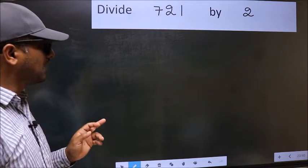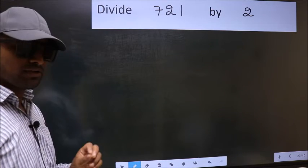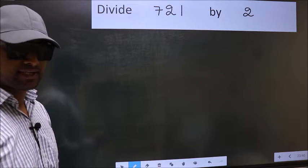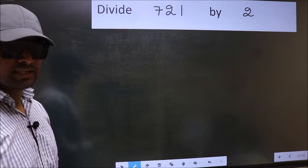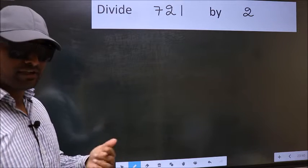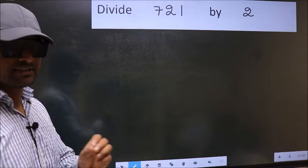Divide 721 by 2. While doing this division, many do this mistake. What is the mistake that they do? I will let you know. But before that, we should frame it in this way.